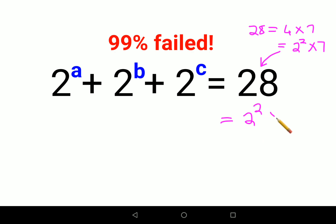Next, what we'll do is we'll take 2 raised to a common, so I'm left with 1 plus 2 raised to b upon 2 raised to a plus 2 raised to c upon 2 raised to a.